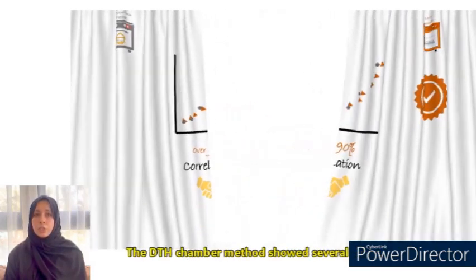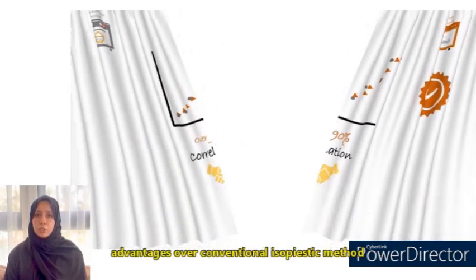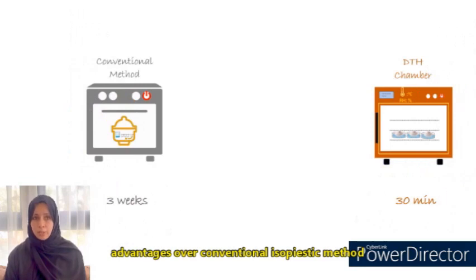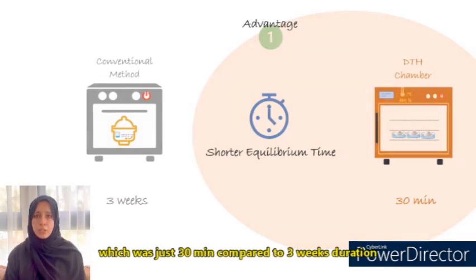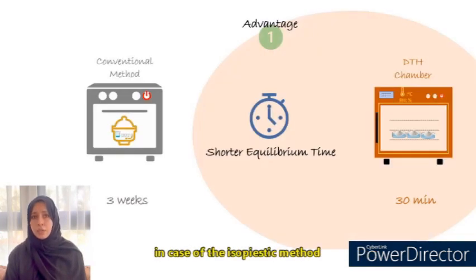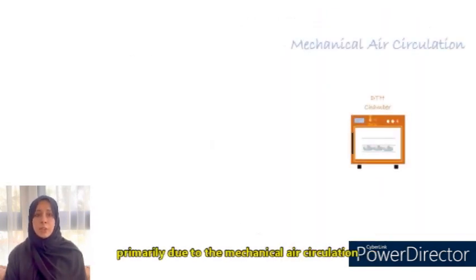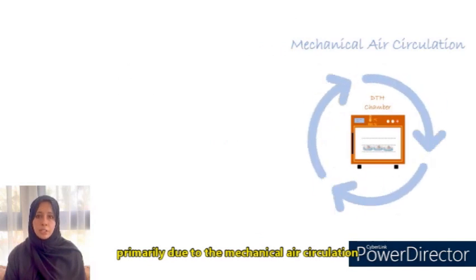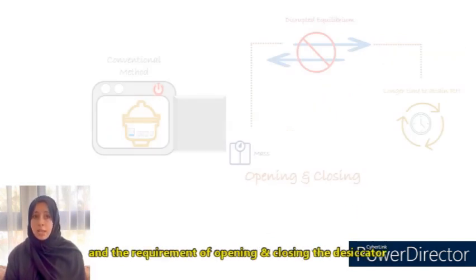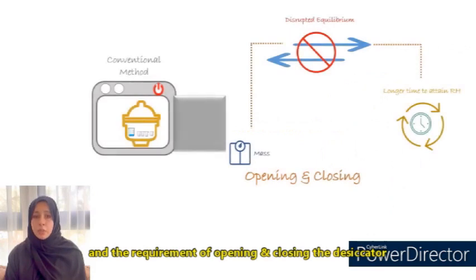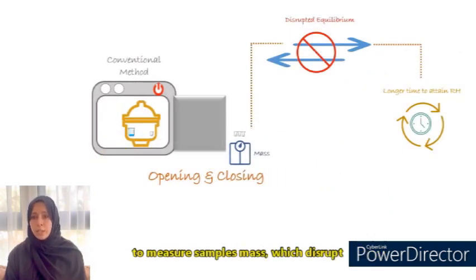The DTH chamber method showed several advantages over the conventional isopiestic method. Mainly, a shorter equilibrium time — just 30 minutes compared to more than three weeks in the case of the isopiestic method — primarily due to the mechanical air circulation of the DTH chamber, which accelerates mass transfer, and the requirement of opening and closing the desiccators to measure sample mass, which disrupts the equilibrium in the old method.